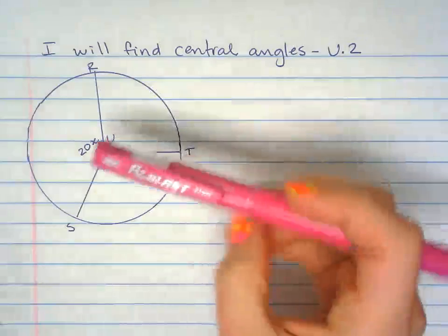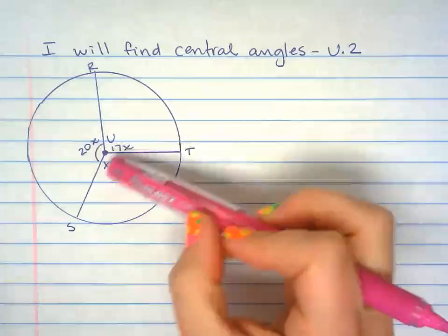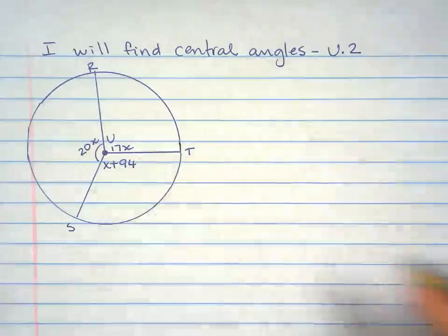So we're finding central angles. We know by definition that if we were to add up all the central angles, they would add up to 360.